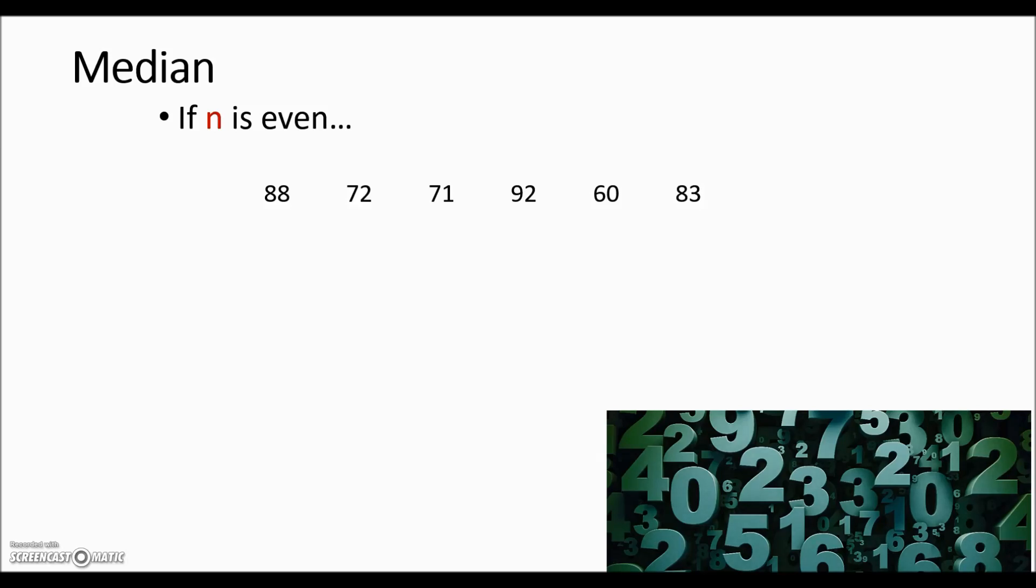In the event you have an even number of data values, the procedures are basically the same to start with. We need to put them in numerical order. Determine where the middle is. Because there's an even number the middle is falling in between two numbers. There's three below and three above this middle when they're in numerical order. And to determine the median you will average those two numbers on either side of the middle. And that result will be the median. So 77.5 is the median even though it isn't an actual number in this group it is the correct representation for the median.